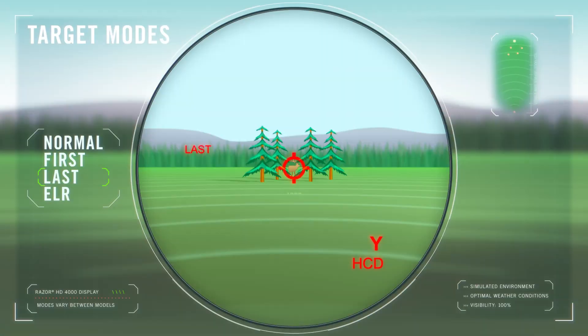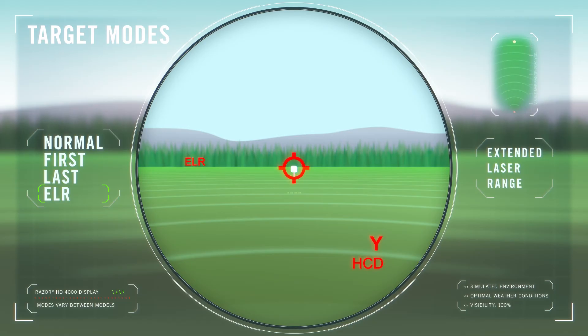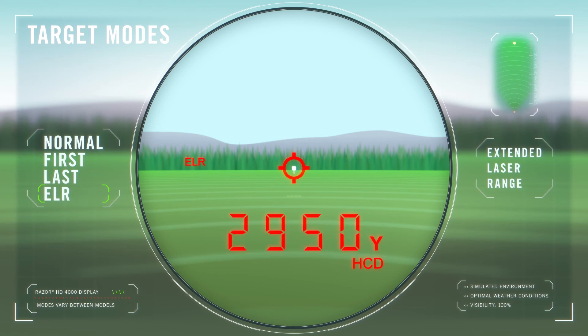ELR or extended laser range mode is ideal for ranging targets at extreme distances. A slightly longer response time allows for greatly extended range distances. The use of a tripod is highly recommended for best results.